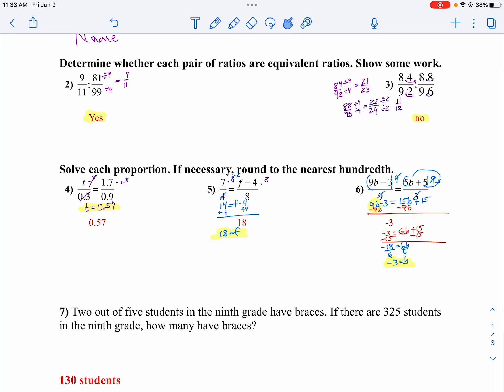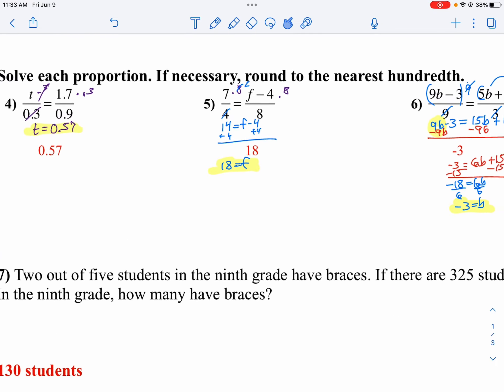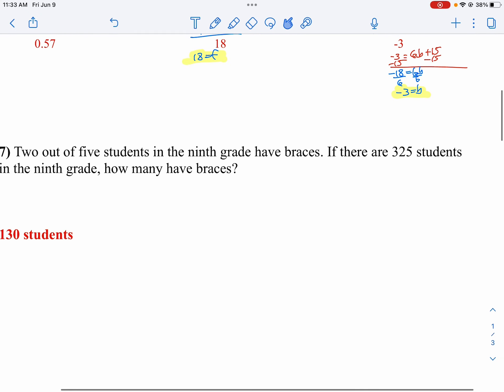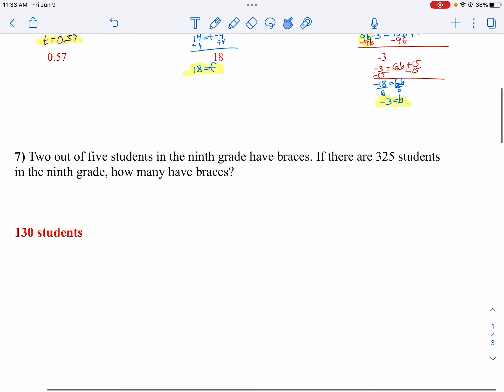Okay, number 7. I have an application problem. It says 2 out of 5 students in 9th grade have braces. So if I write this, the 2 would be my braces and the 5 would be my total. There are 325 students in 9th grade, so 325 goes in my denominator. How many students have braces? So x is going to be the number of students who have braces.